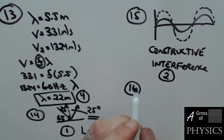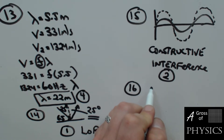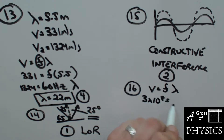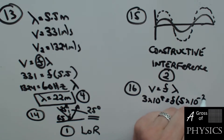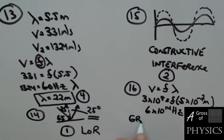Number 16: which color of light has a wavelength of 5 times 10 to the negative 7 meters in air? I need the frequency because the reference table lists by frequency. Using V equals F lambda: 3×10⁸ equals F times 5×10⁻⁷. So 3×10⁸ divided by 5×10⁻⁷ gives 6×10¹⁴ hertz. Looking at the chart, 6×10¹⁴ hertz is in the green zone — so that's green light. Choice two.